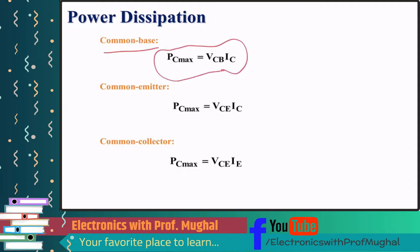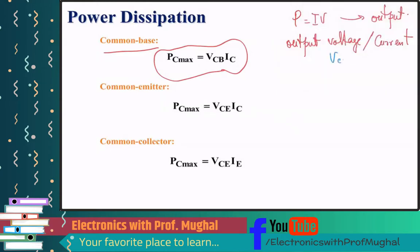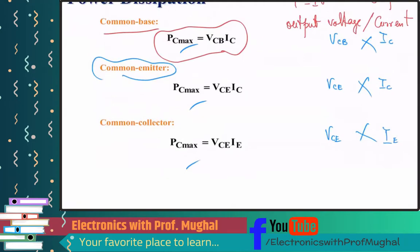Since P equals I times V, power is associated with the output. In a common base configuration, output voltage is Vcb and current is Ic. In a common emitter configuration, output voltage is Vce and current is Ic. For common collector, output voltage is Vce and output current is Ie. Taking the product of those two values gives you Pc max for each configuration.